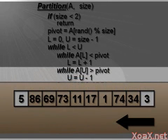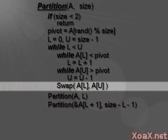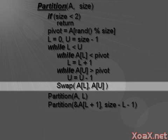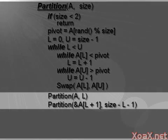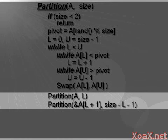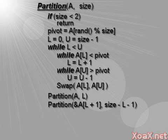Whenever the lower index is at an element that is greater than or equal to the pivot, and the upper index is at an element that is less than or equal to the pivot, we swap the elements at these indices. When lower equals upper, the array is partitioned, and we call partition on each of the new partitions recursively. This recursion eventually sorts the entire array.